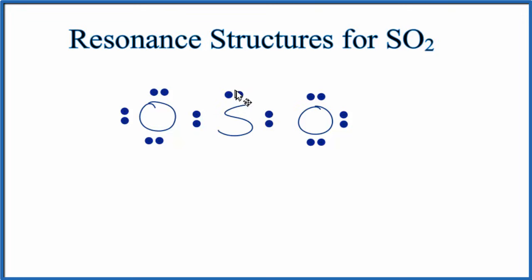We don't have an octet on the sulfur, so in this case we could move these two valence electrons here to form a double bond. So now we have eight valence electrons around the sulfur, eight around the oxygen, same for this oxygen. So this is a valid Lewis structure based on our rules.